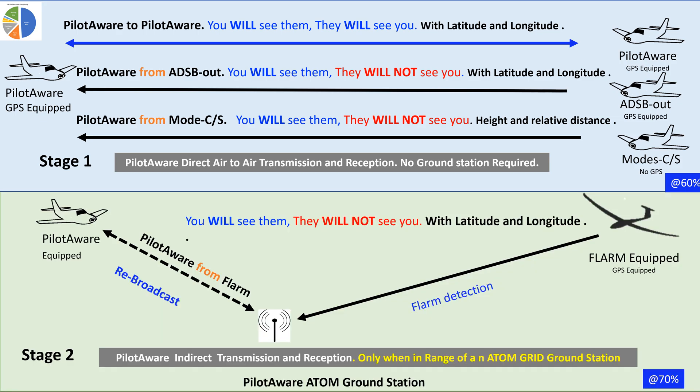60% wasn't enough for PilotAware supporters and following a tragic mid-air collision between a glider and a light aircraft, they wanted to see FLARM-equipped aircraft as well. To do this, PilotAware uses a network of ground stations to detect glider locations transmitted on one frequency and rebroadcast their position to PilotAware users on the other. Now all PilotAware-equipped aircraft can detect all FLARM-equipped aircraft when they're in range of one or more PilotAware Atom grid ground stations.